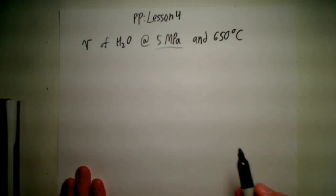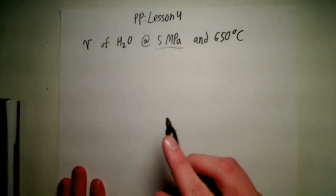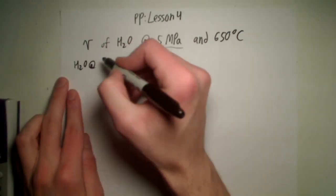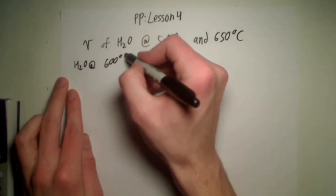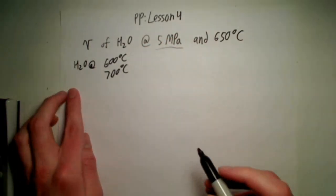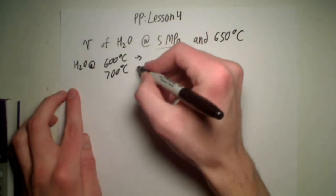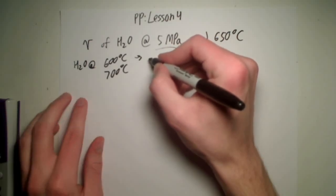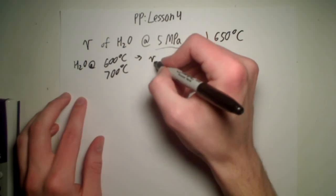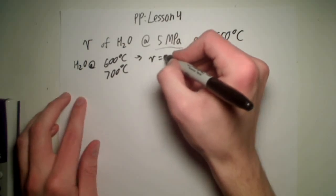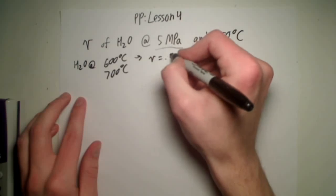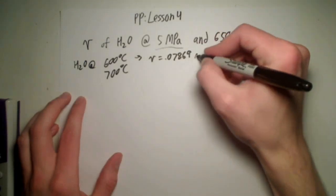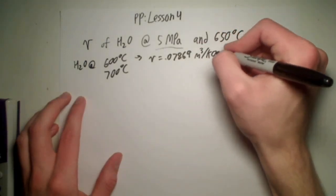I do find one, and I see that we have an entry for water at 600 degrees Celsius and 700 degrees Celsius. For 600 degrees Celsius, we find that the specific volume equals 0.07869 meters cubed per kilogram.